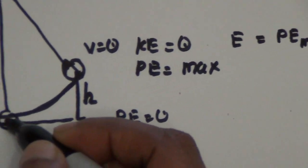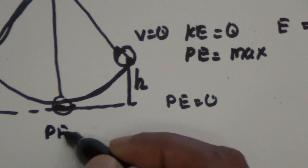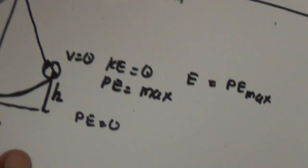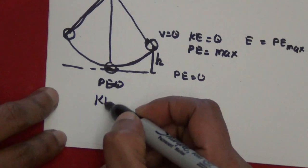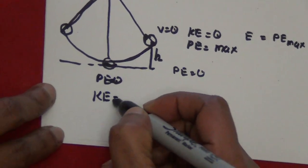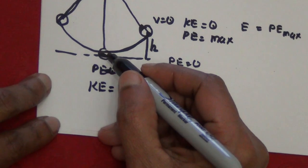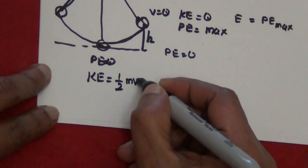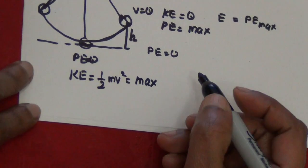The total energy at the ends equals the maximum potential energy. At the bottom, the potential energy is zero but we can find the kinetic energy: ½mv², which is at its maximum. So at the bottom the pendulum has its maximum speed.